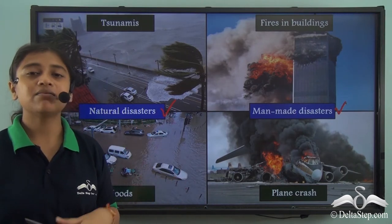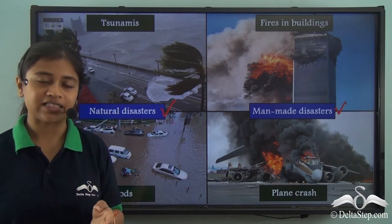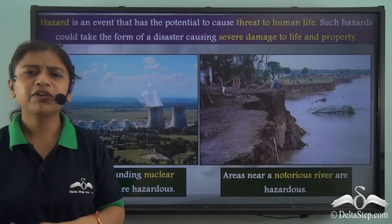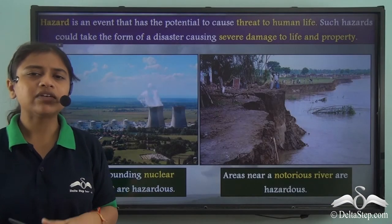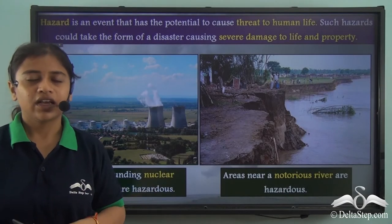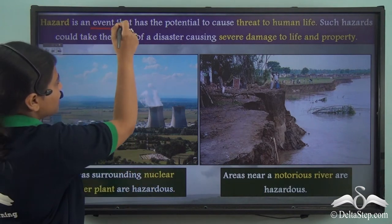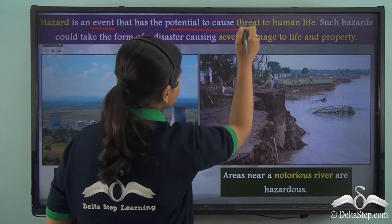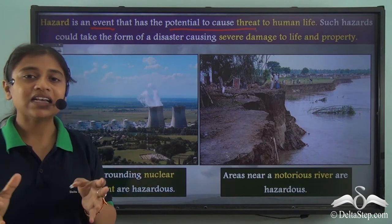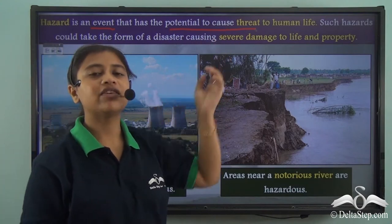We will take a look at some natural disasters and understand the factors that lead to them. But before we do that, we need to have a clear understanding of the difference between a hazard and a disaster. A hazard is an event that has the potential to cause a threat to human life.